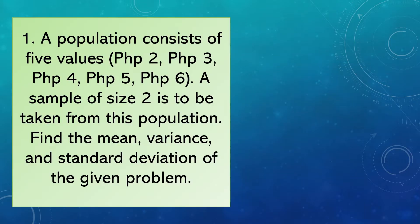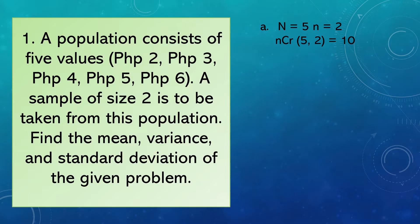Let's start. The problem: a population consists of five values — two pesos, three pesos, four pesos, five pesos, and six pesos. A sample of size two is to be taken from this population. Find the mean, variance, and standard deviation. So, N or the population is equal to five, and the sample size is equal to two.